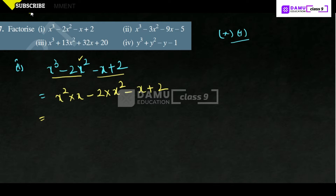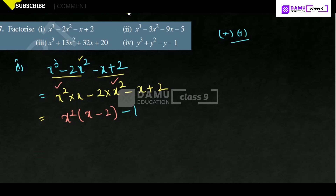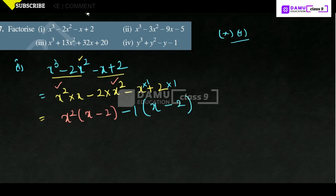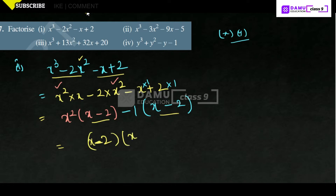Here, what you can take common from both: x² is there in the first part, x² is there in the second part. Taking x² as common, what is the remaining term? x - 2. Here you can take minus as common, so let us take minus 1 as common. In order to get plus here, minus 2 we have to multiply. From both, x - 2 is common, so let us take x - 2 outside. The remaining term in the first one is x² - 1.